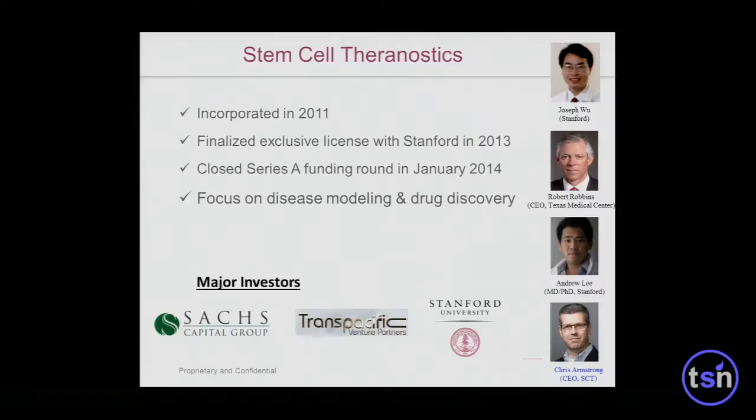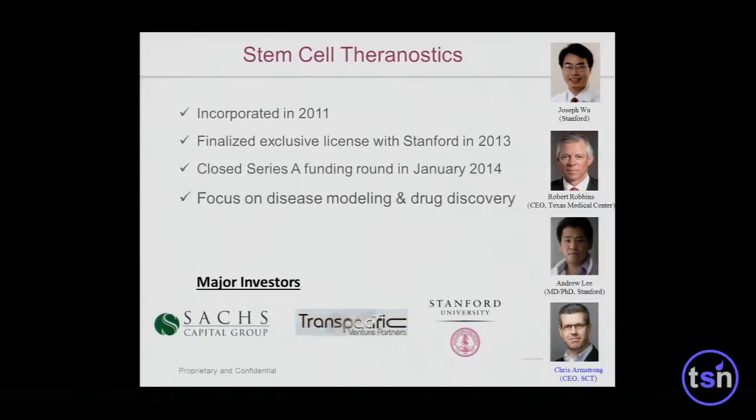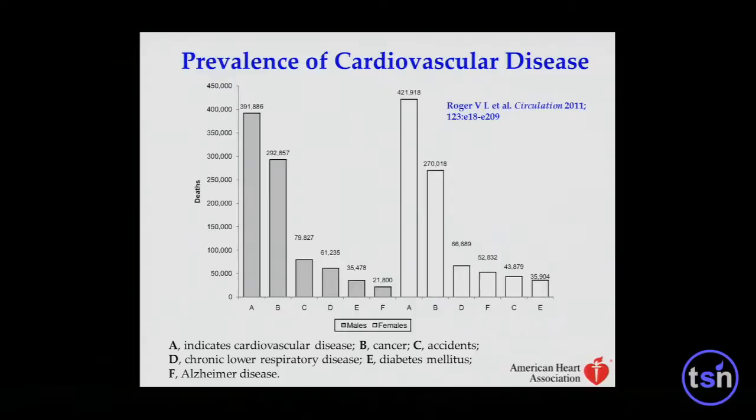Stem Cell Theragnostics was incorporated in 2011, received exclusive licensing from Stanford in 2013, and Series A in 2014. It's focused on disease modeling and drug discovery. Myself, Bobby Robbins, and Angela Lee are the co-founders. We recently recruited Chris Armstrong to be the CEO, and Stanford is also one of the major investors.